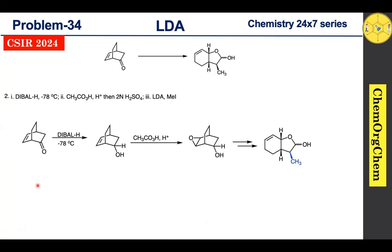The second reaction condition involves DIBAL-H at −78°C, then peroxyacetic acid, then 2N sulfuric acid, then LDA and methyl iodide. When you use DIBAL-H first, it quickly reduces the carbonyl to the corresponding alcohol. Then when you use peroxyacetic acid, there is no keto group present — only the alkene — so peroxyacetic acid would do epoxidation instead. Once epoxidation occurs, it is impossible to achieve the target product, so this sequence is not suitable for this transformation.